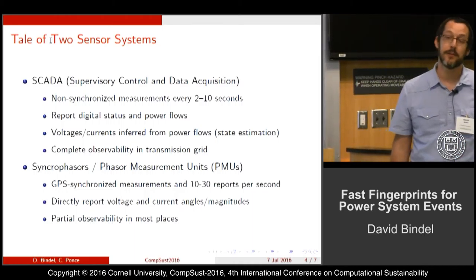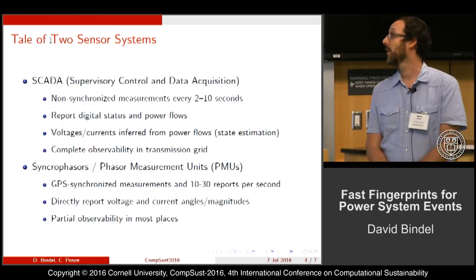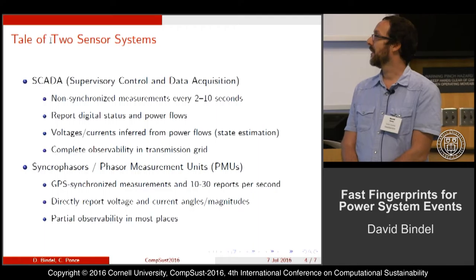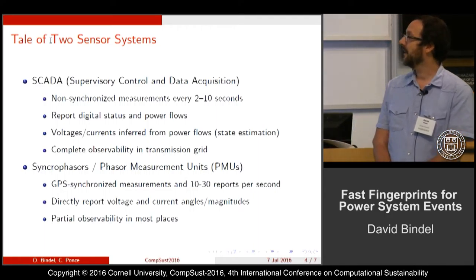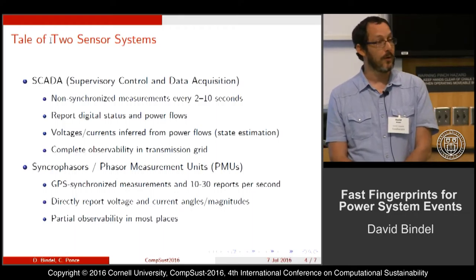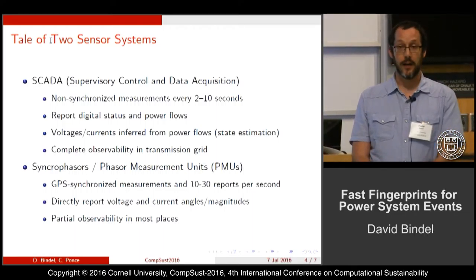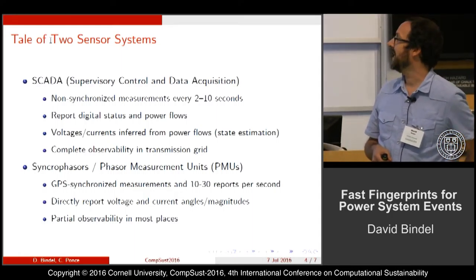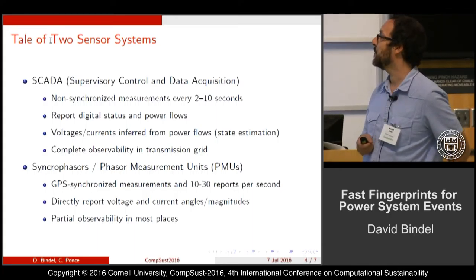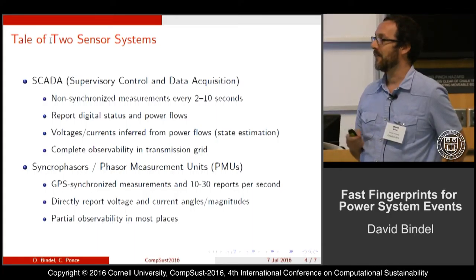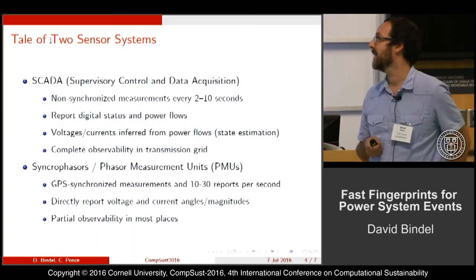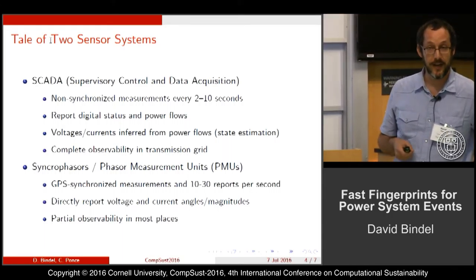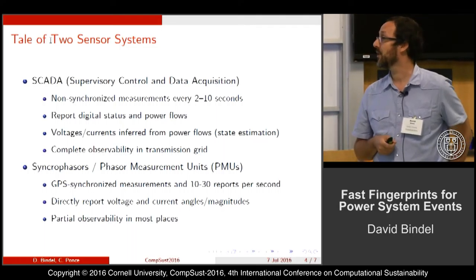There are really two sensor systems available for looking at the state of the power grid. The traditional one, which has been around for a long time, is the SCADA system. It reports on power flow and digital status measurements — for example, whether lines are tripped. You get a reading every two or ten seconds, so not super frequently. What we really get from this is power flows, whereas what we're interested in is voltage and current phasors. Going from one to the other requires a power flow computation — it's a nonlinear equation-solving problem.